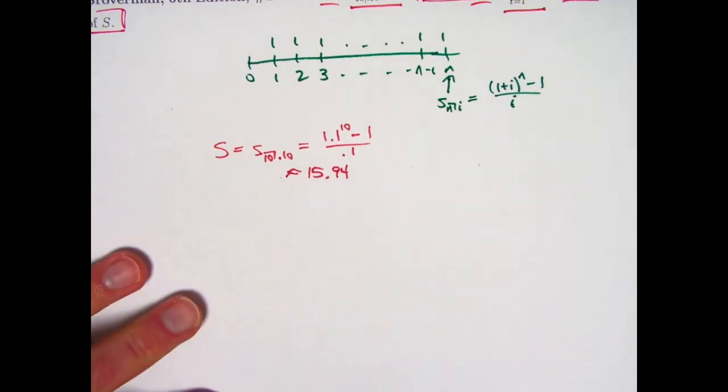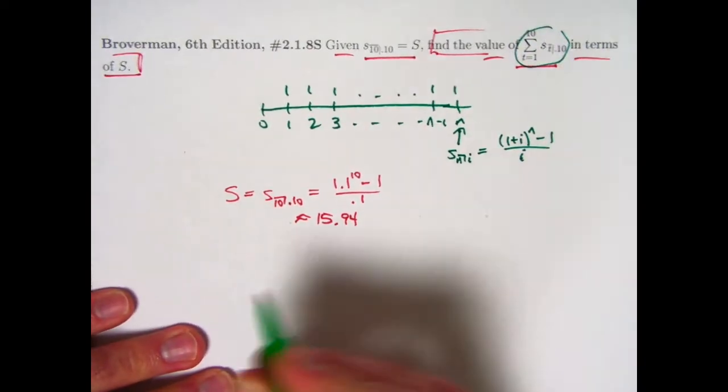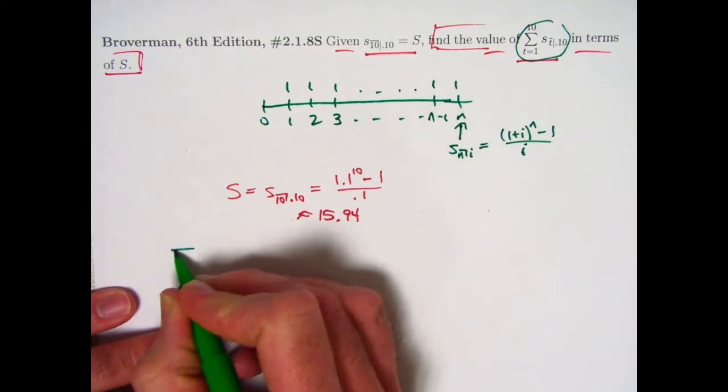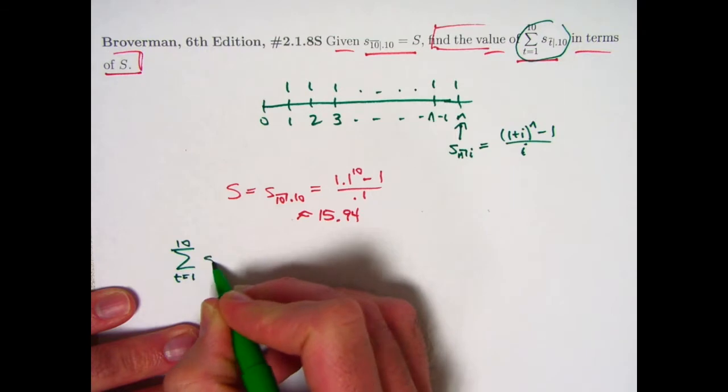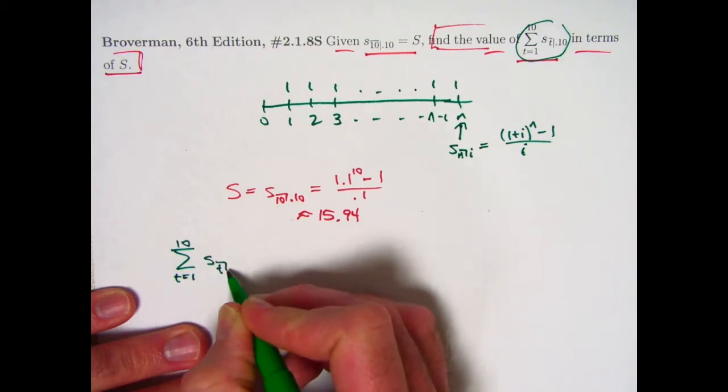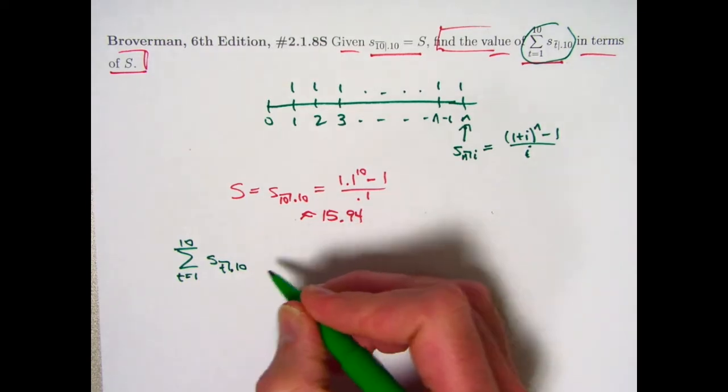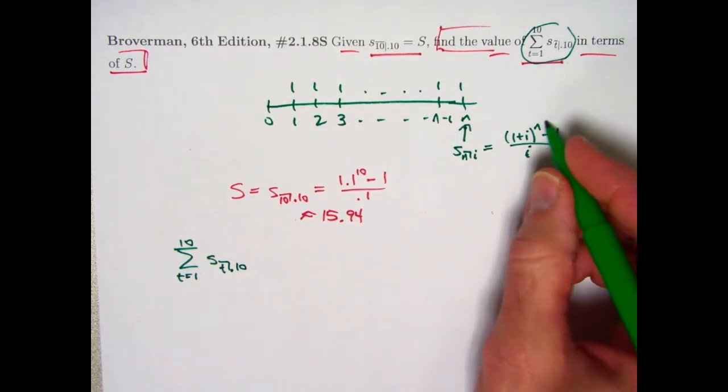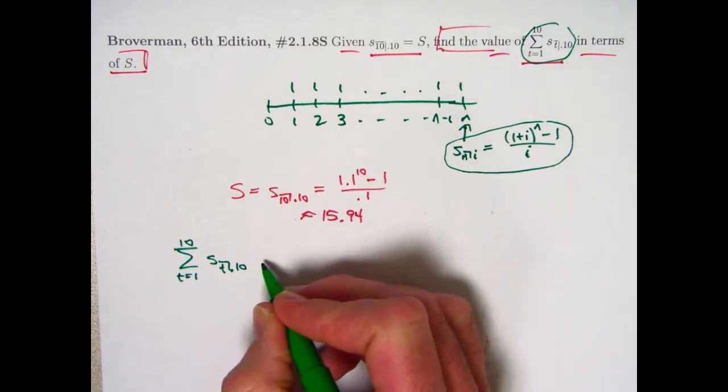Let's come to the problem now. Deal with this summation here. Sum as t goes from 1 to 10 of this symbol. So again, what I said was the best thing to do is really just to use this equation here and work with this symbolically, that's the best approach.